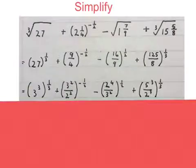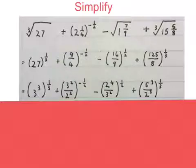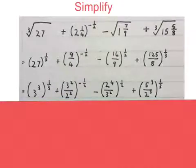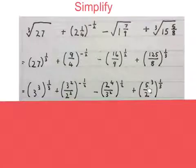Next we prime factorize these numbers again — look at the prime factorize with my calculator video. 27 becomes 3 to the power of 3. 9 becomes 3 squared. 4 becomes 2 squared. 16 becomes 2 to the power of 4. 9 becomes 3 squared. 125 becomes 5 to the power of 3. And 8 becomes 2 to the power of 3.